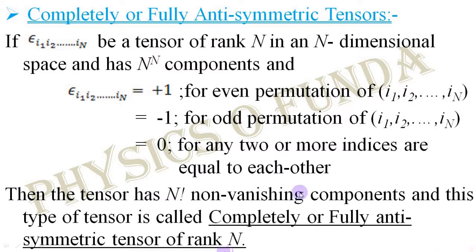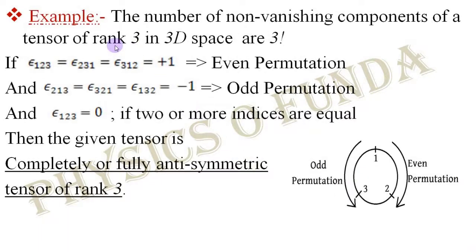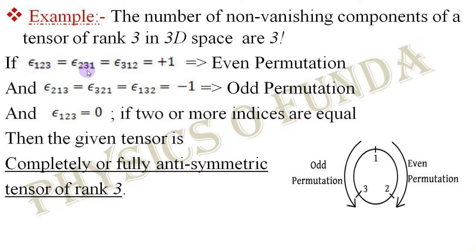Let us understand this definition with an example. We consider a tensor of rank 3 in three-dimensional space, so it has 3! = 6 non-vanishing components. Among those components, the ones obtained by even permutation of the indices — such as ε₁₂₃, ε₂₃₁, and ε₃₁₂ — all these components are obtained by even permutation of the indices.